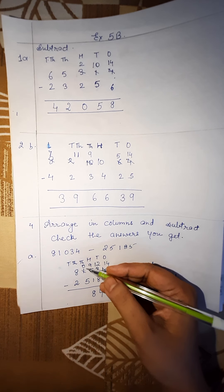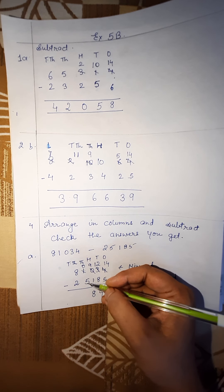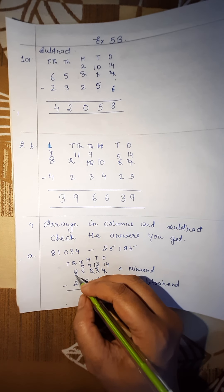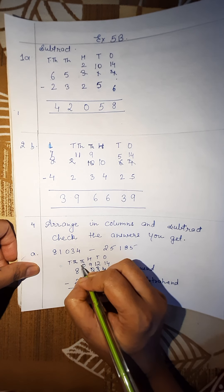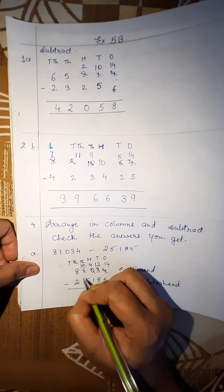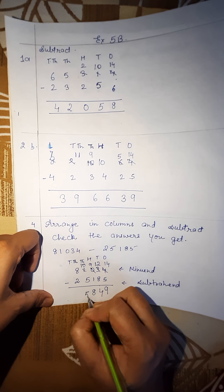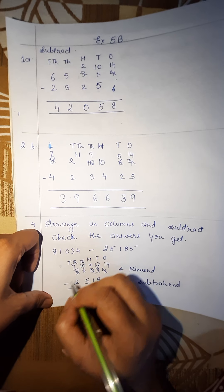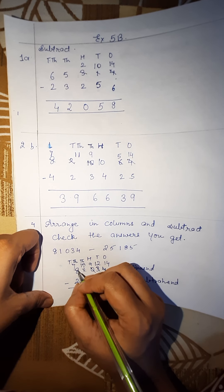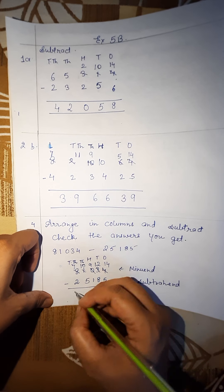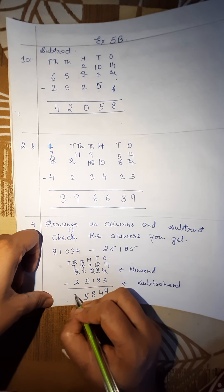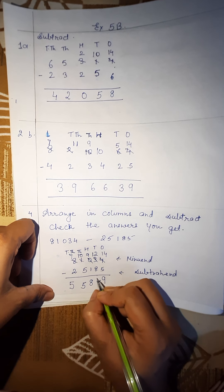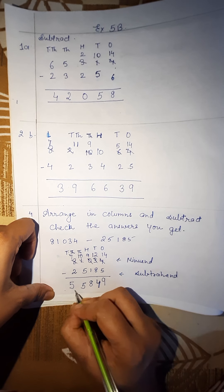As you can see at 1000's place we have 0 and 5. So what you have to do here? You have to borrow 1 from 10,000's place. So when we borrow it will become 10. So 10 minus 5 will give you 5. As we have to reduce 1 from 8, so 8 minus 1 will give you 7. So 7 minus 2 gives you 5. So your answer is 55,849. Clear?